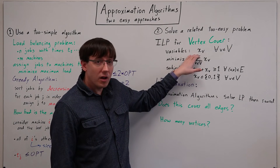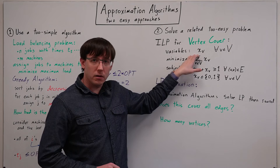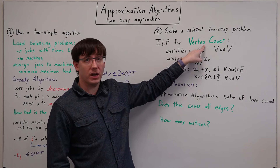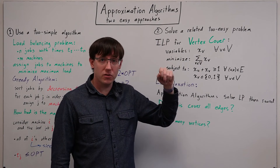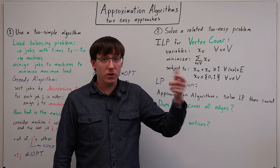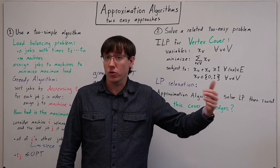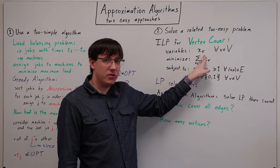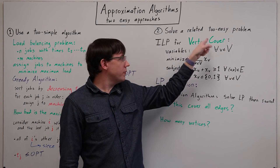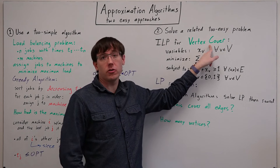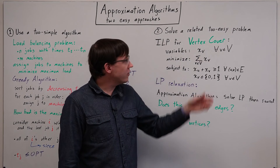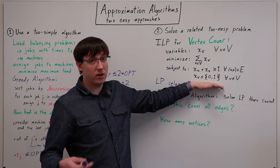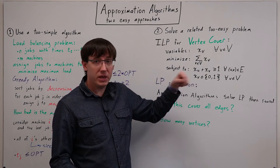Note that we are once again solving an optimization problem here. And the problem we know to be NP-complete is the decision version of vertex cover, where we're given some k and we're asking, is there a vertex cover of size k or smaller? But if we could efficiently solve this optimization version, that would let us efficiently solve the decision version of vertex cover. And so we don't expect this integer linear program to be efficiently solvable in general, unless P equals NP.